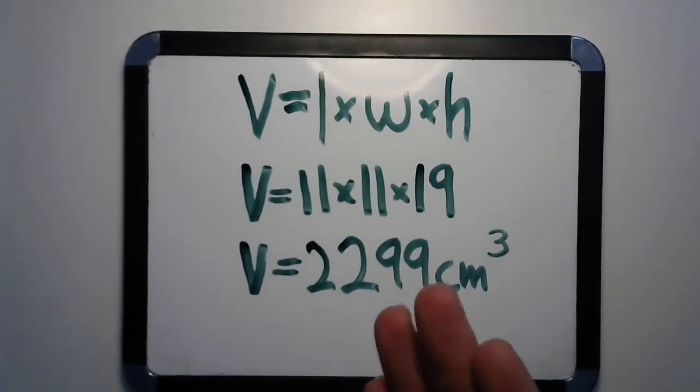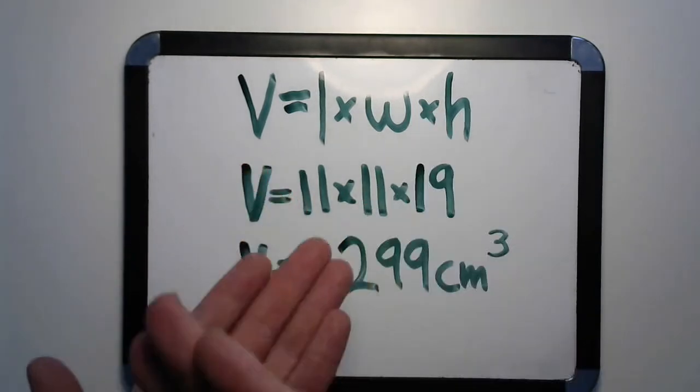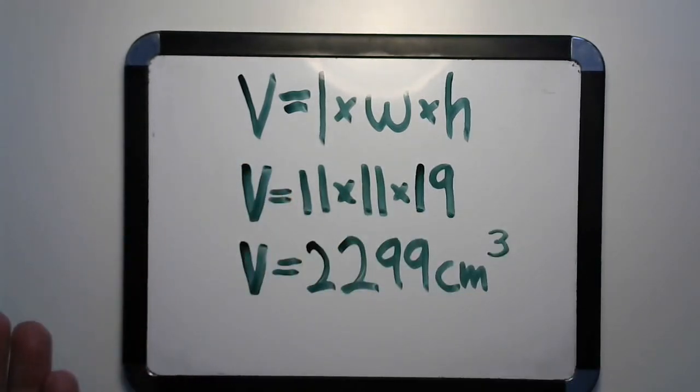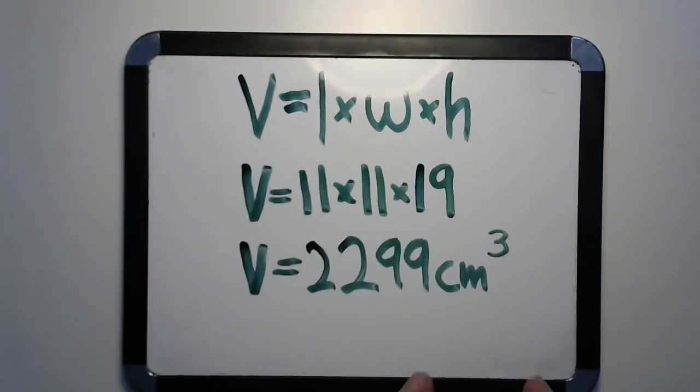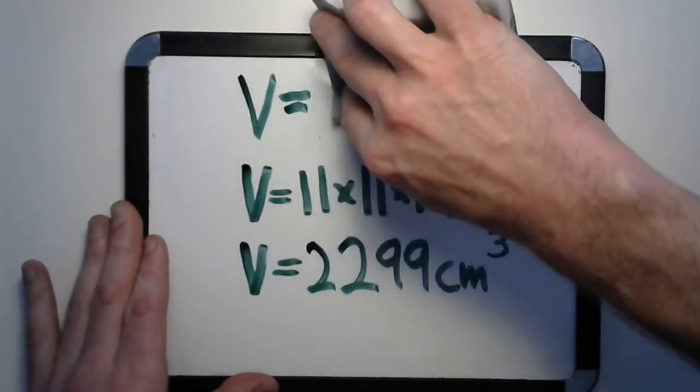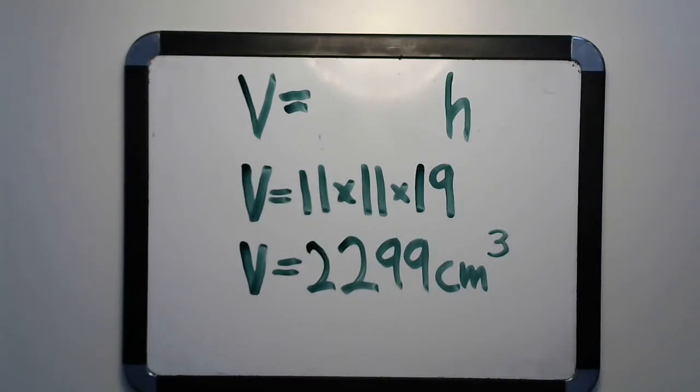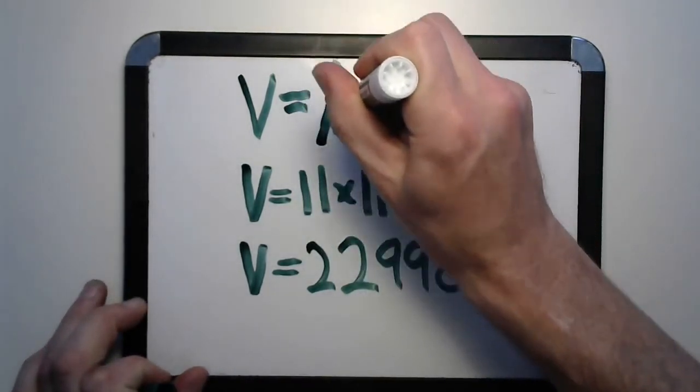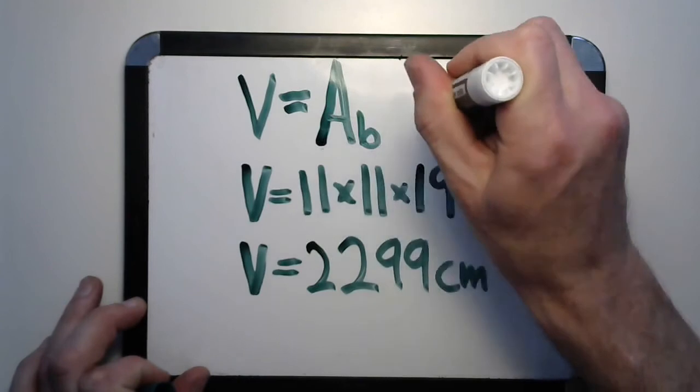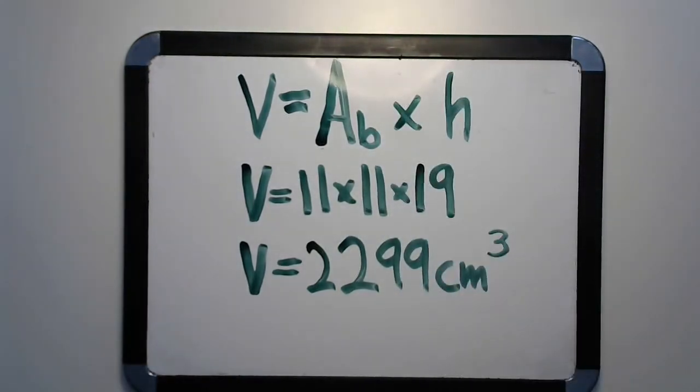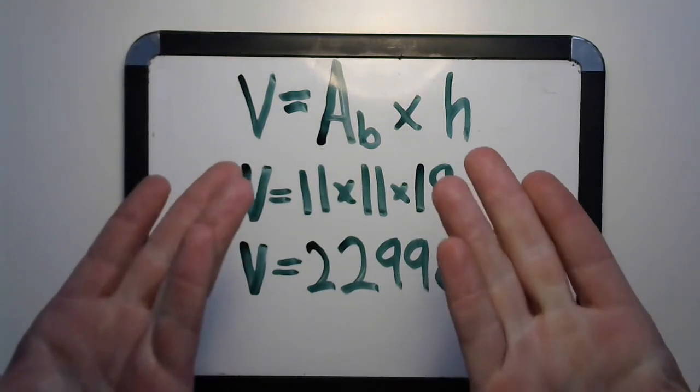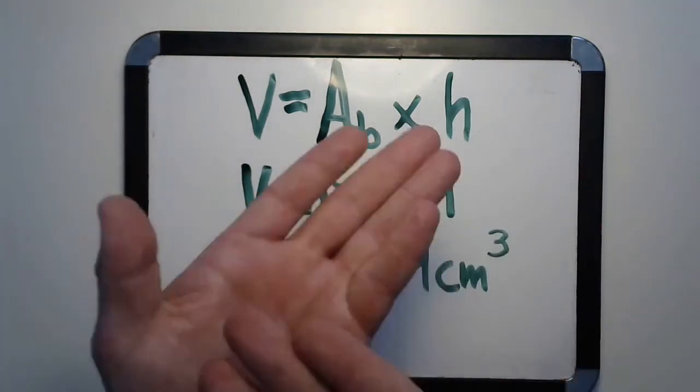What if we made a substitution to this formula? What if instead of writing it like this, we give ourselves an alternative and we say that volume is equal to the area of the base times its height? This might be a more efficient way of writing your formula. I don't know, take what you will from this.